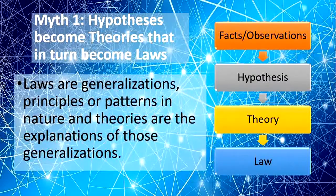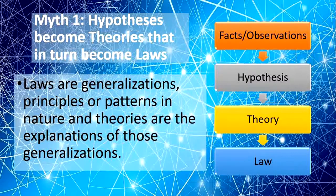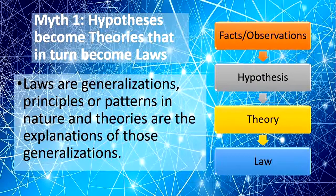McComas said that laws are generalizations, principles or patterns in nature, and theories are the explanation of those generalizations. So laws and theories are different, and every theory doesn't become a law. Some theories may remain theories because they may not be verified. Practically, some theories are still theories and they have not been verified yet.